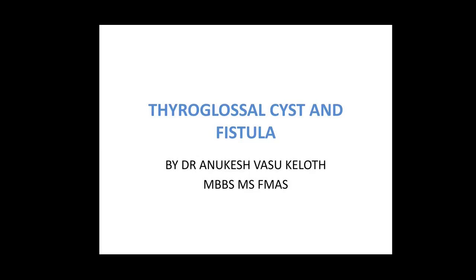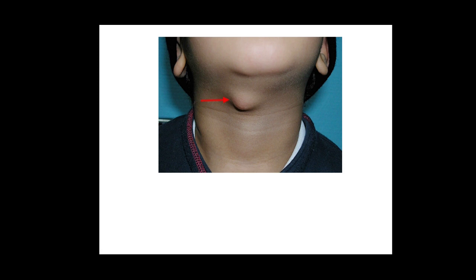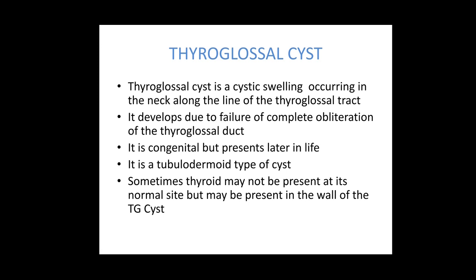Today we are going to talk about thyroglossal cyst and fistula. A thyroglossal cyst is a cystic swelling occurring in the neck along the line of the thyroglossal tract. It develops due to failure of complete obliteration of the thyroglossal duct. If the duct doesn't obliterate at a portion of the tract, that portion will form a cyst.